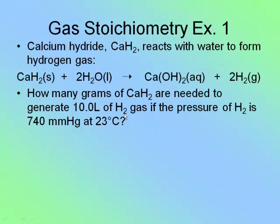Here is an example. Calcium hydride, CaH₂, reacts with water to form hydrogen gas. How many grams of calcium hydride are needed to generate 10 liters of hydrogen gas if the pressure of hydrogen is 740 millimeters of mercury at 23 degrees Celsius?